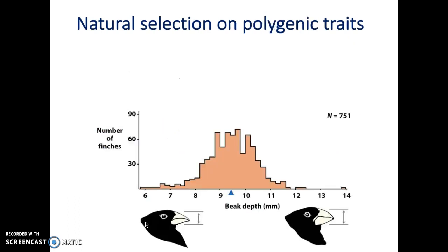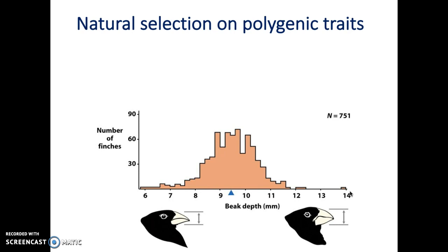Natural selection on polygenic traits is a little bit different from single gene traits. At the beginning of a population, instead of seeing very few distinct traits, you have a whole range of traits. As an example, here we have the beak depth, which is the trait we're looking at. This beak depth ranges from 6 to 14, so instead of only having a beak depth of 6, 10, and 14, you have any number in between 6 and 14.